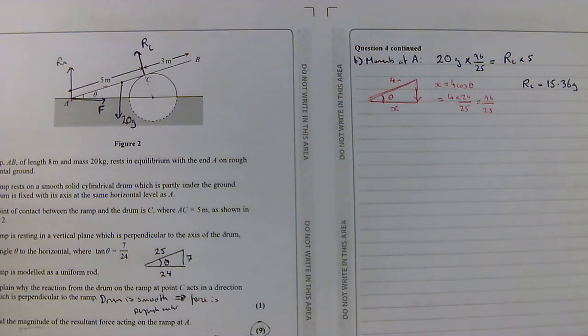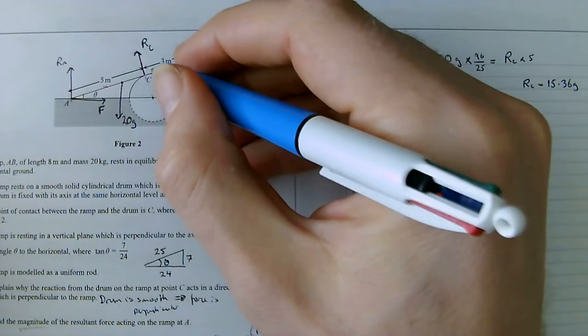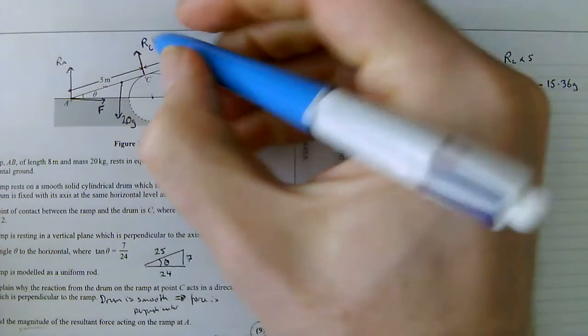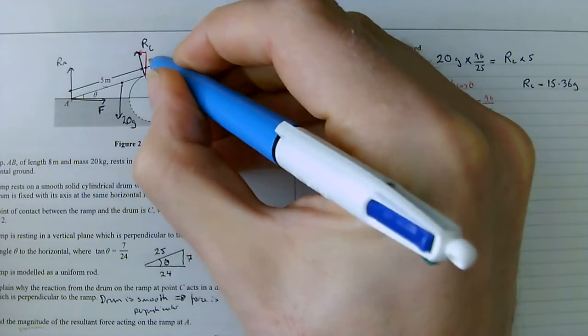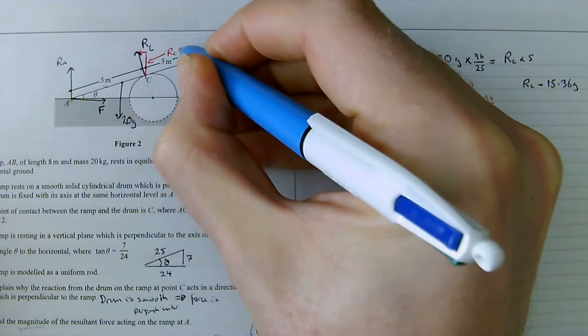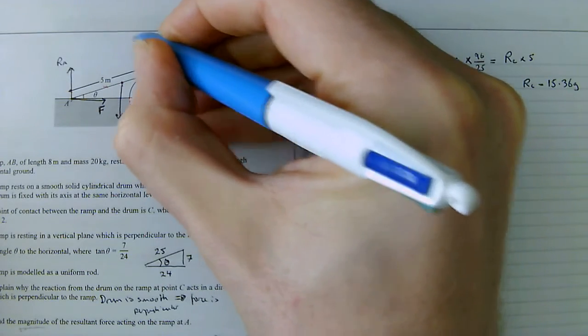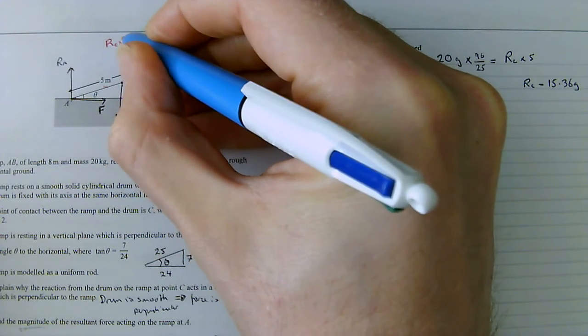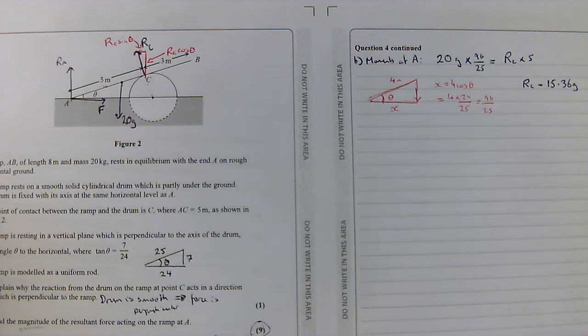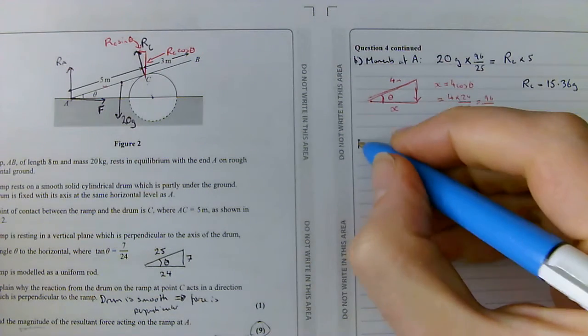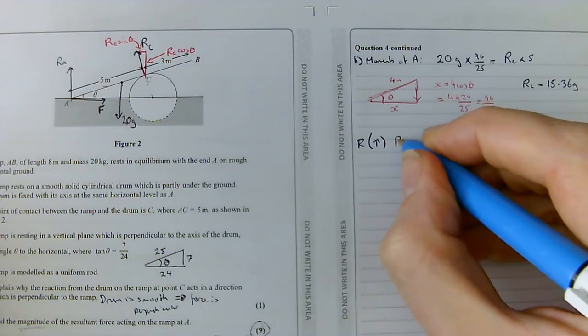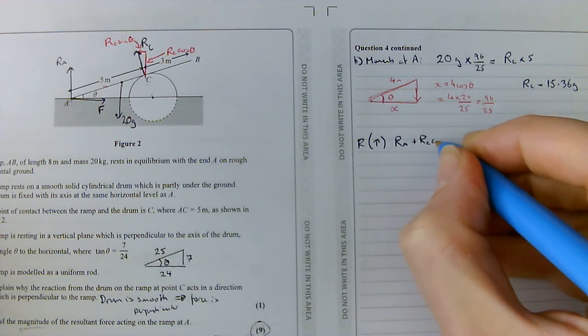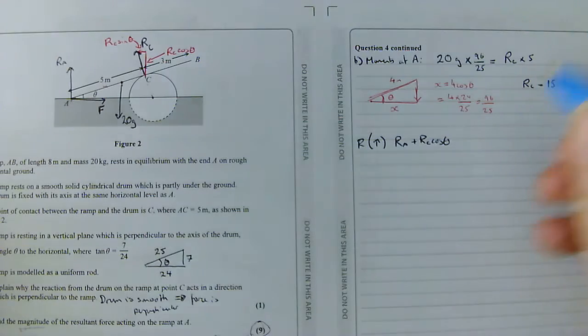We're now going to do the second part of the static rigid bodies question. After we've done the moments, we're going to need to resolve the forces in a horizontal and in a vertical direction. I know that vertically, this is my theta, so this is going to be R_C cos theta, and this is going to be R_C sine theta up here. So let's start by resolving vertically. If we resolve vertically, I can say my R_A plus R_C cos theta, those are my upward forces, are equal to my downward forces, which is equal to 20G.